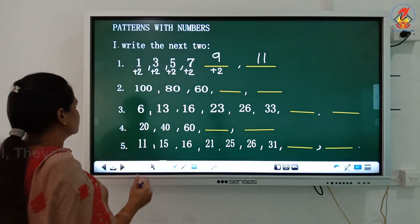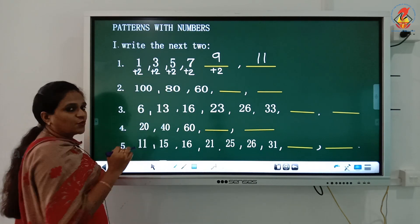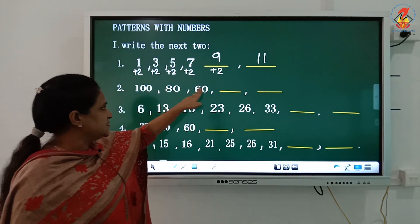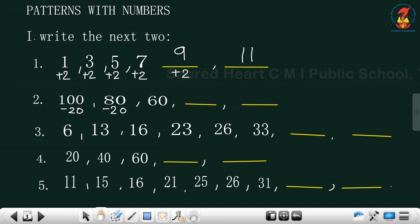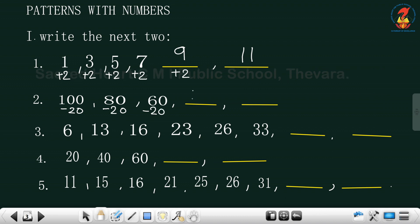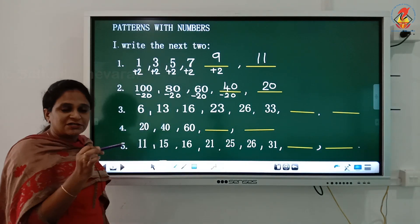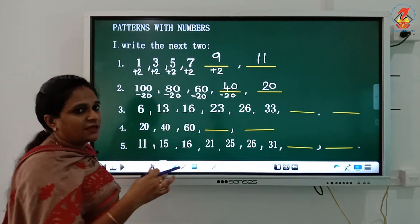Second question: 100, 80, 60 - it's in decreasing order. Let's subtract and see: 100 minus 80 is 20, so we're subtracting 20 each time. 100 minus 20 is 80, 80 minus 20 is 60, 60 minus 20 is 40, 40 minus 20 is 20. So 20 is being subtracted from each number to get the next number.